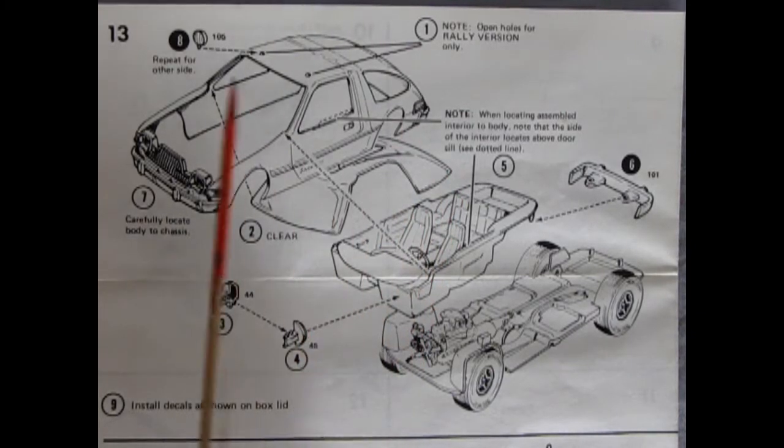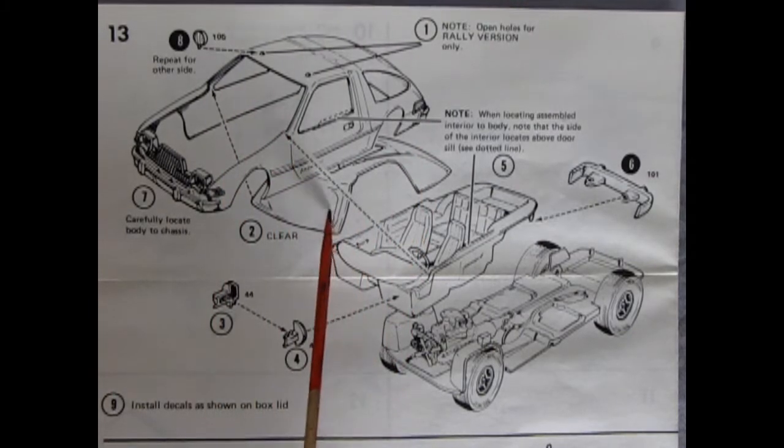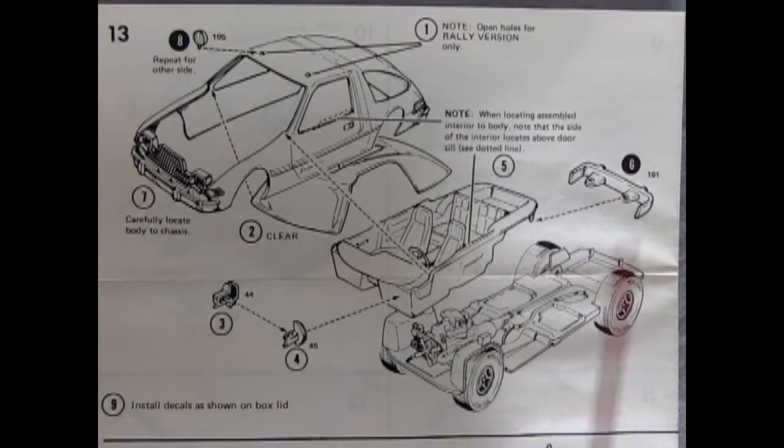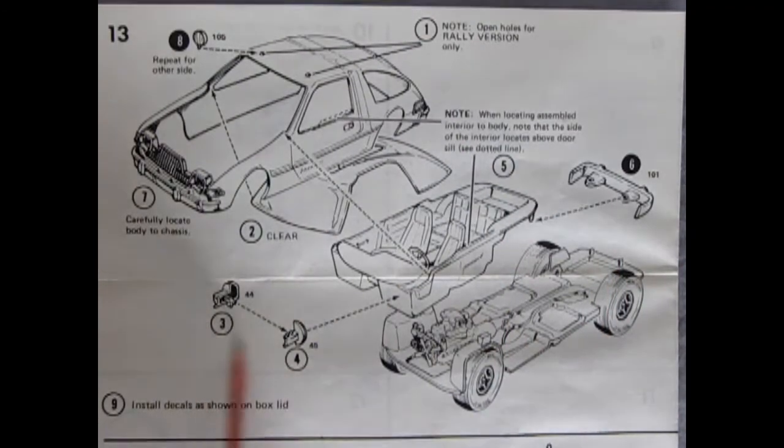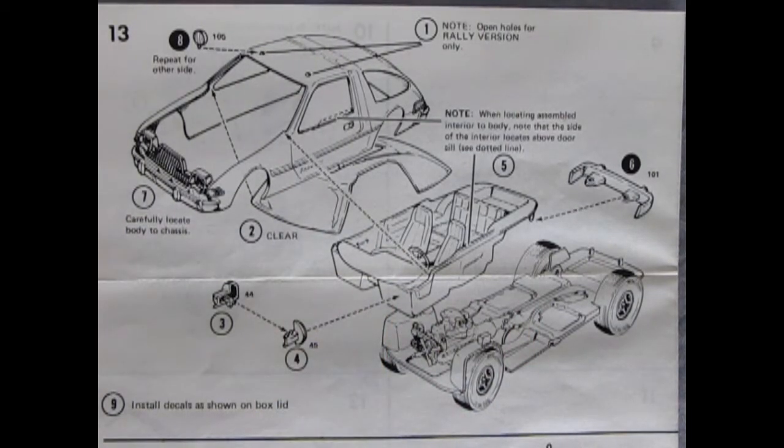So you can add in these nice little rally spotlights up top if you want, but then you can put your glass in there, your interior, your rear bumper will hook on there, and then you've got the two-piece brake master cylinder that goes on the front in there and all this puts together and then you've got your nice stock version.